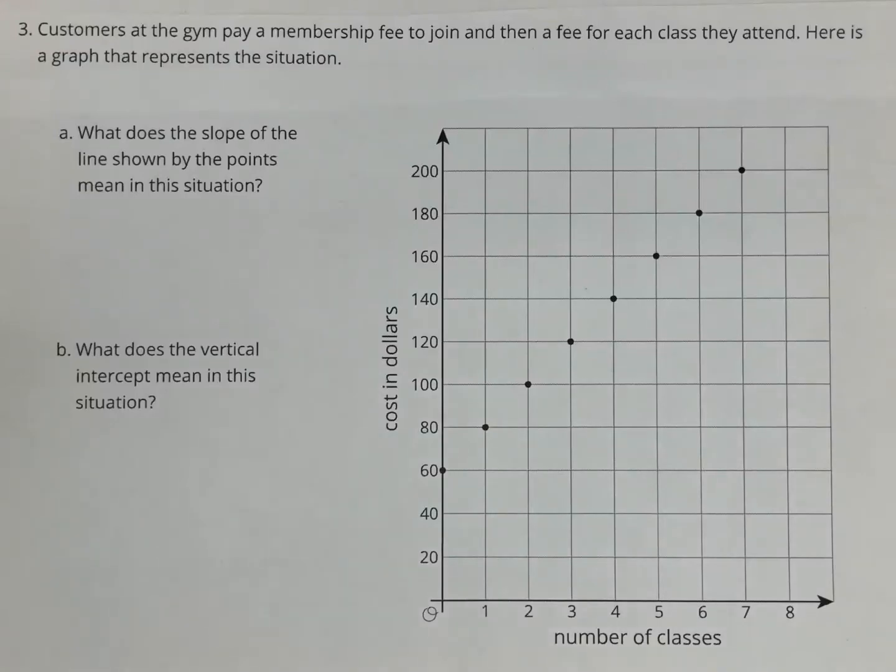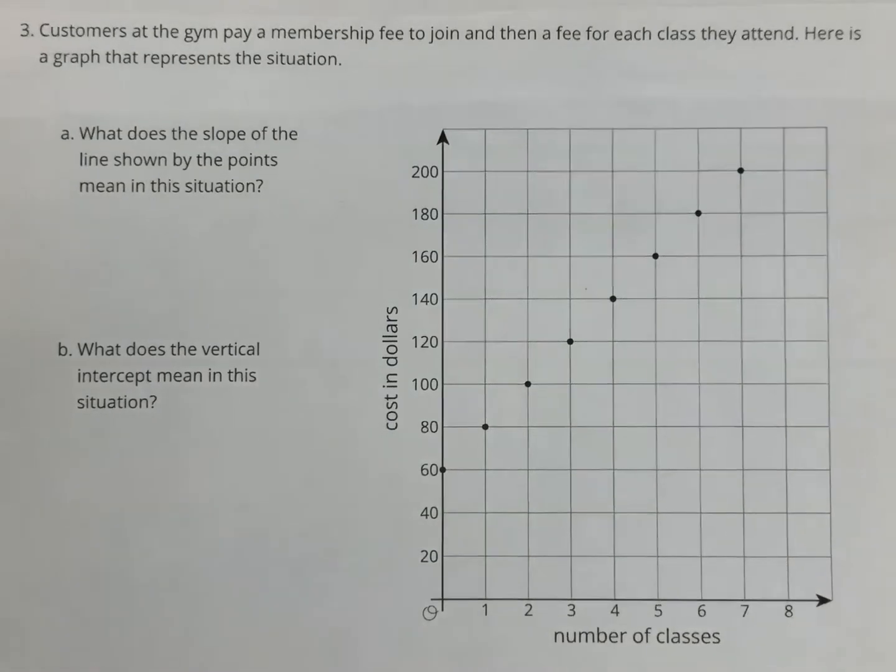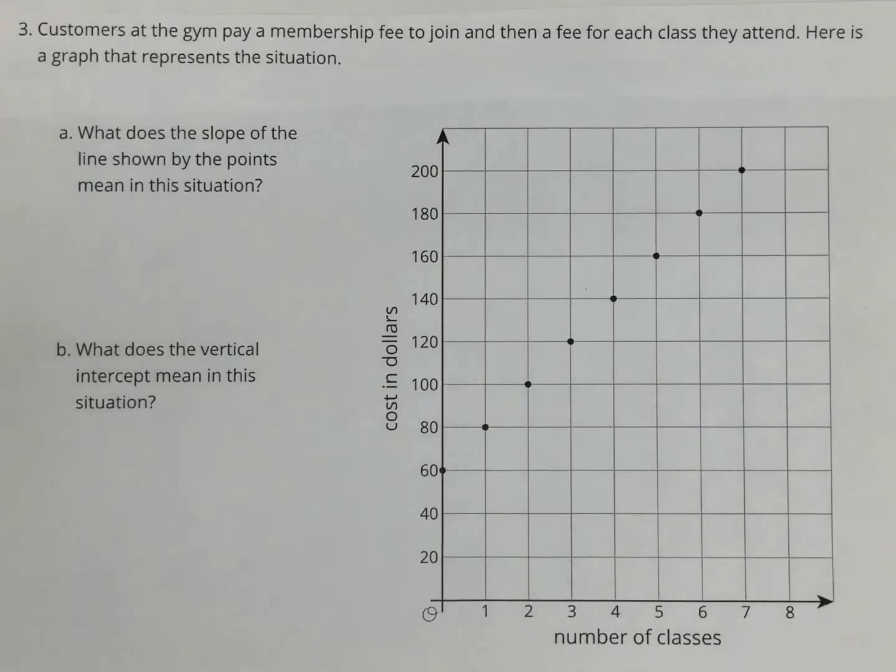All right, ladies and gentlemen, here is Unit 3, Lesson 6, Practice Problem Number 3. So we'll first read the problem. Customers at the gym pay a membership fee to join and then a fee for each class they attend. Here is a graph that represents the situation.